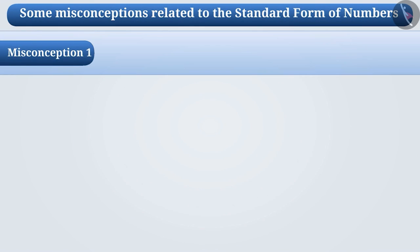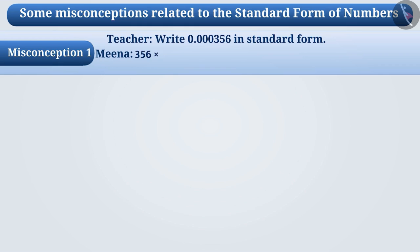Misconception 1: In class, the teacher asks students to write the number 0.000356 in standard form. Meena wrote it as 356 × 10⁻⁶. Raj wrote the number as 3.56 × 10⁻⁴, and Rohit wrote the number as 3.56 × 10⁴.